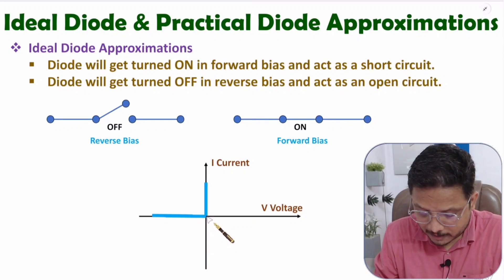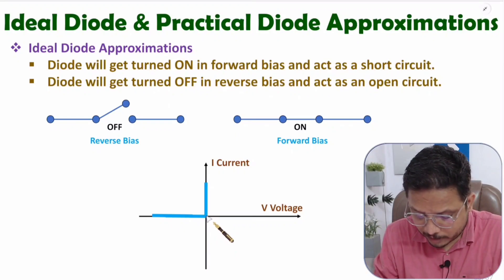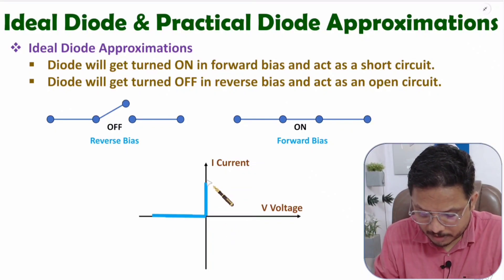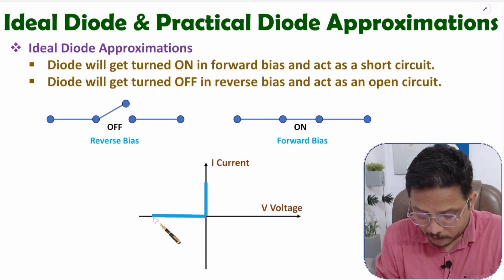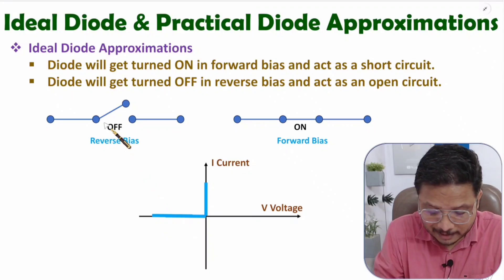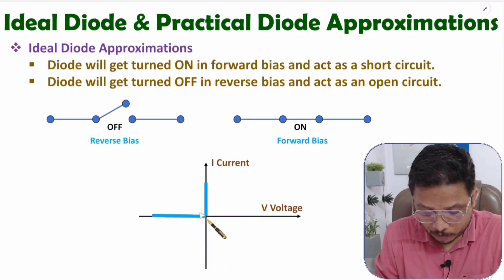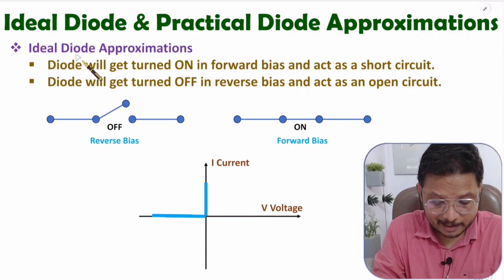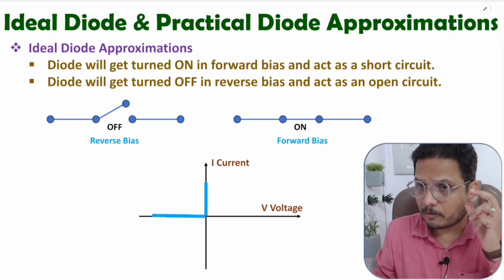If you observe the VI characteristics, in forward bias with a minor voltage increase a huge current is flowing — a vertical line is there. So in forward bias, current will immediately flow through the diode. In reverse bias, zero current is flowing. Even if you increase the reverse bias voltage, since it is acting like a switch which is off, no current will flow through the diode.